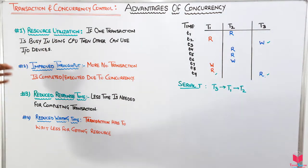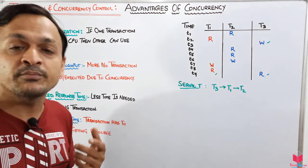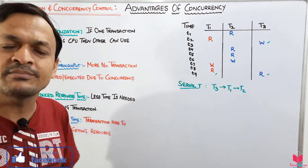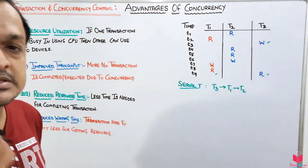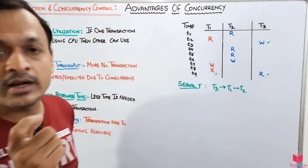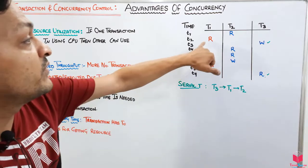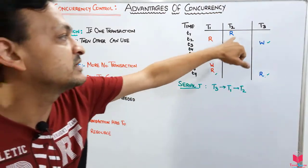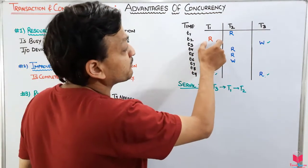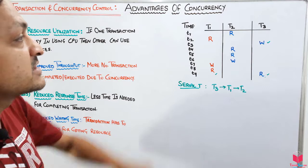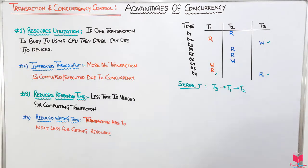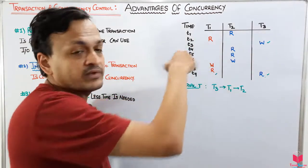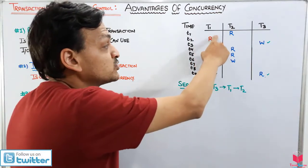Now let's discuss the advantages of concurrency. The first advantage is resource utilization. Suppose a computer has a CPU, input/output devices, printers, and many other things. If one transaction needs the CPU but another transaction requires the I/O devices, there is no need for the second transaction to wait for the first to complete. We can provide I/O resources to that transaction immediately, so its small portion starts executing. That's why resource utilization increases with concurrency.